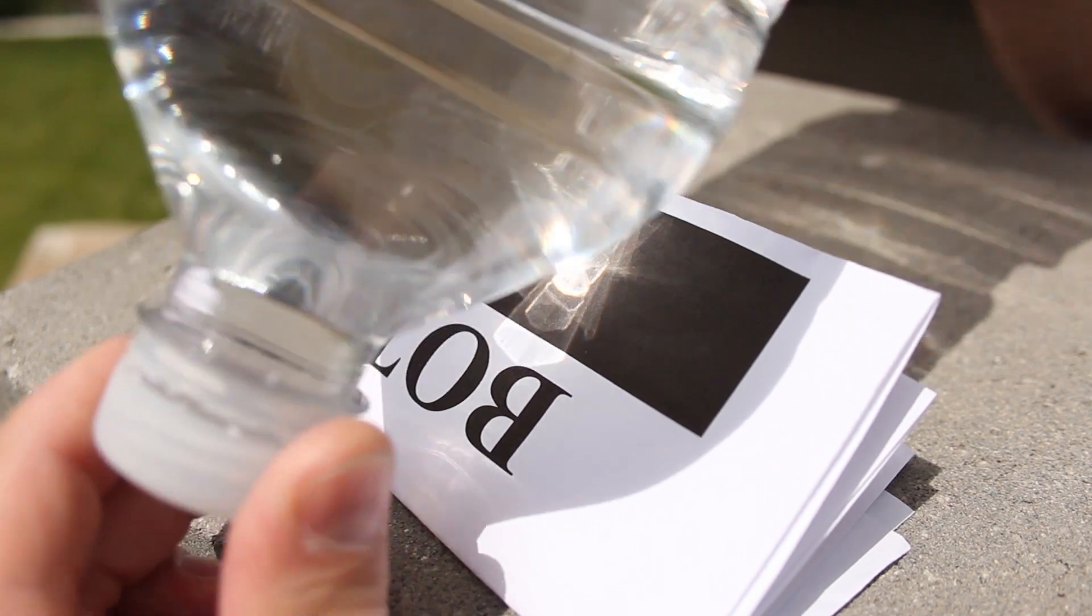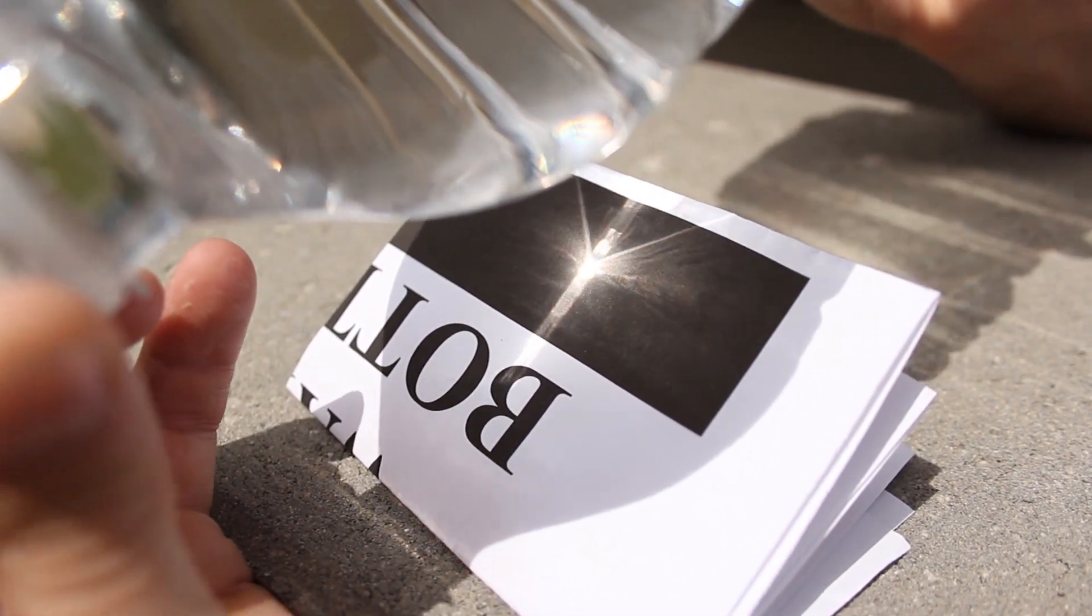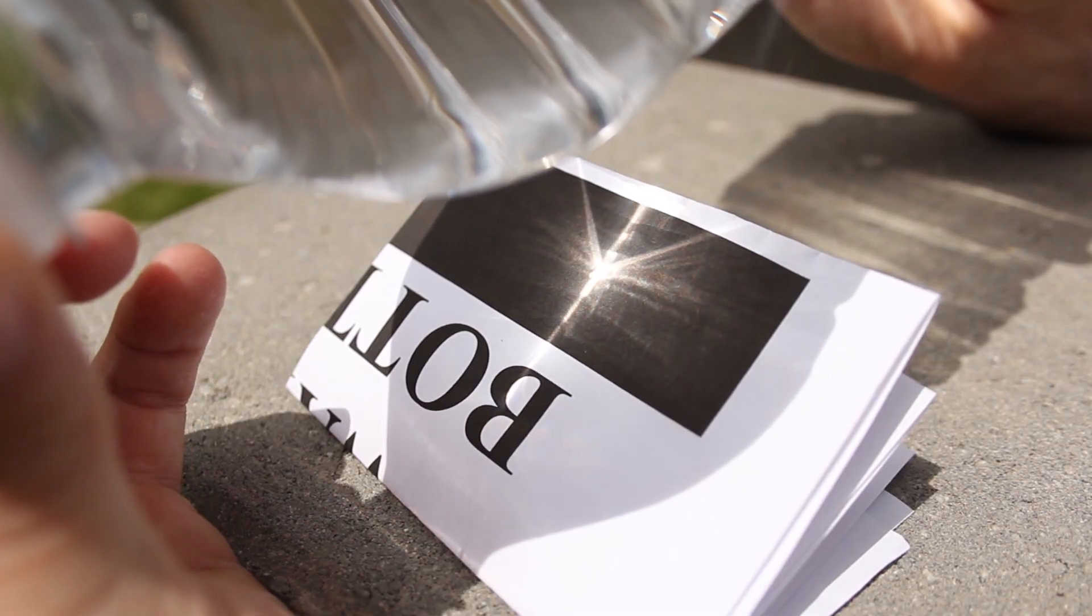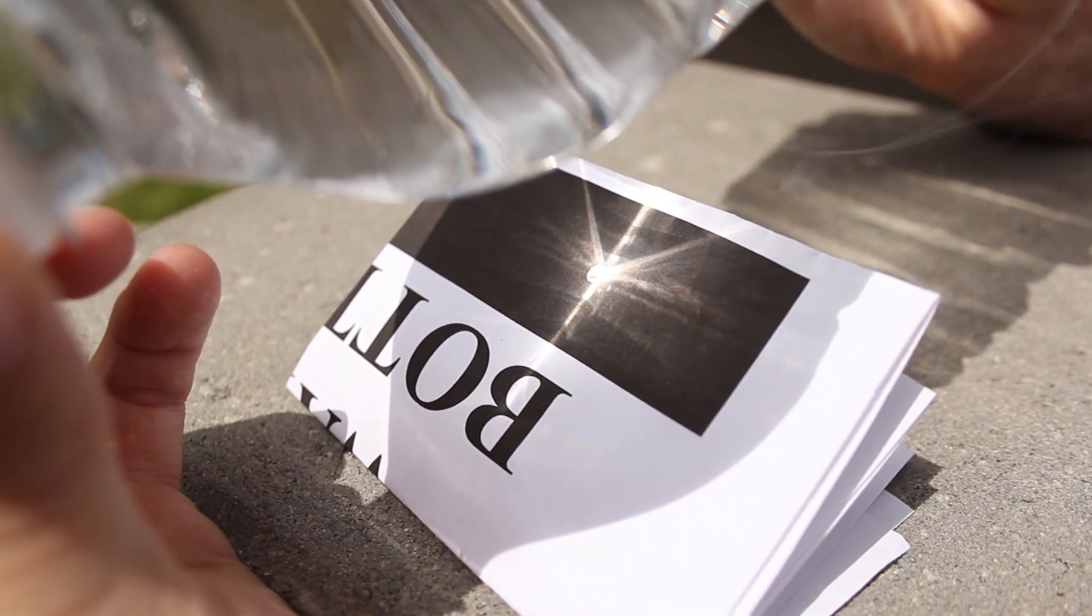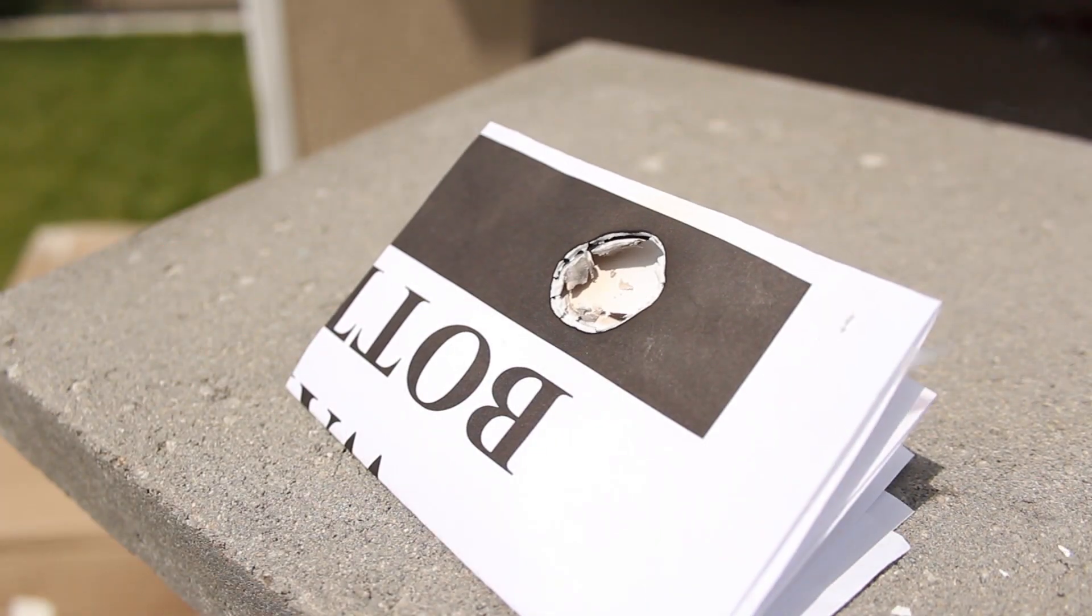When focusing the light, hold the bottle close to the paper and slowly back it away, shifting the bottle around to find the area where the majority of light is concentrated. It should be very bright and start smoking within a few seconds. Keep the light focused until a hole begins to burn and grows to about the size of a quarter.